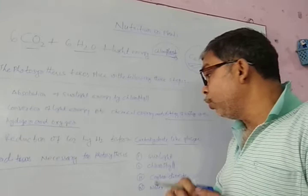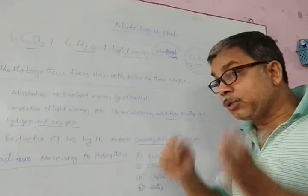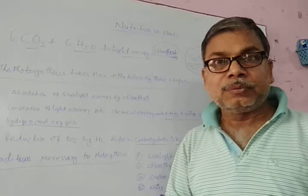So the conditions necessary for photosynthesis are: sunlight, carbon dioxide, and water. These are all necessary for photosynthesis to take place.